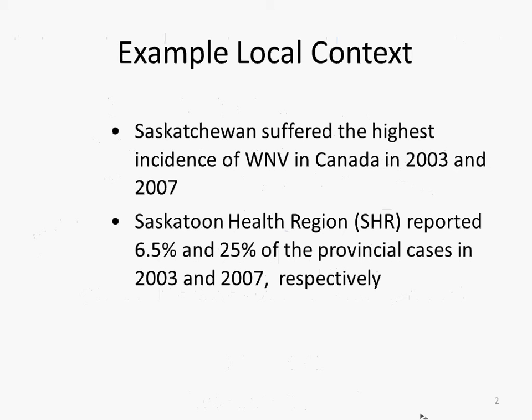It turns out that Saskatchewan is at the epicenter of the West Nile virus epidemic in North America, and West Nile here is more severe than in Africa. It can lead to death, acute flaccid paralysis, meningitis, encephalitis — infection of the brain and spinal cord — killing some patients and debilitating others, potentially in a lifelong way. In 2003 and 2007 there were particularly big outbreaks in this province due to West Nile-bearing mosquitoes biting people.